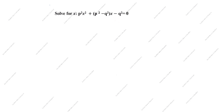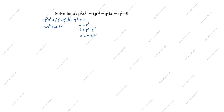Now we will solve this problem. Given: p²x² + (p² - q²)x - q² = 0. We will solve this using the quadratic equation standard form ax² + bx + c = 0. What is a? a = p². What is b? b = p² - q². What is c? c = -q².